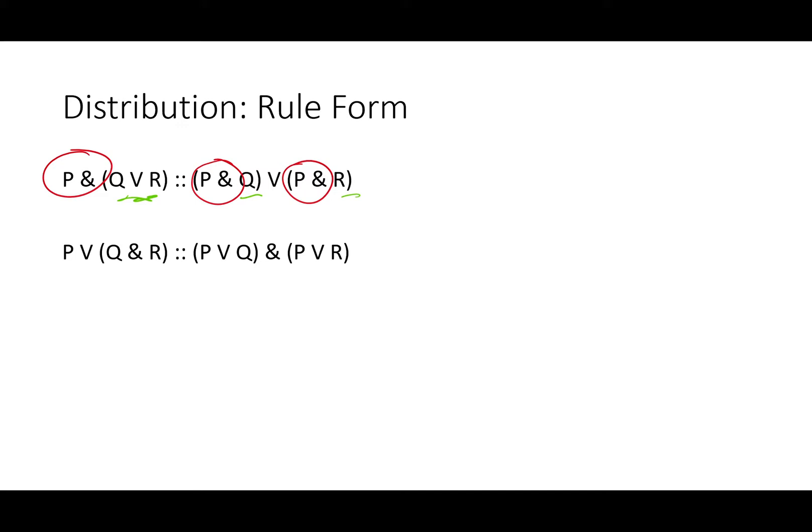On the left, it tells us we know we've got P, and we also know we have a choice between Q and R. On the right, it says: knowing that, we have a choice between 'P AND Q' or 'P AND R', though we don't know which of those it is. You might use this rule, especially from right to left, if you want to use simplification and get P all by itself.